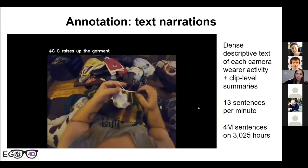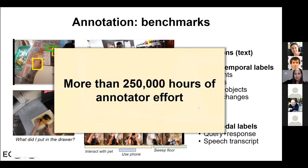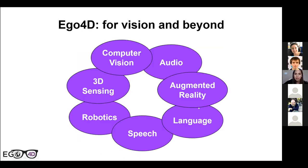Full annotations are available for all benchmarks, including space-time labels about actions, people, objects, state changes, and hands, as well as multimodal labels like queries and responses in language and speech transcription. Getting all these annotations took more than 250,000 hours of annotator effort.